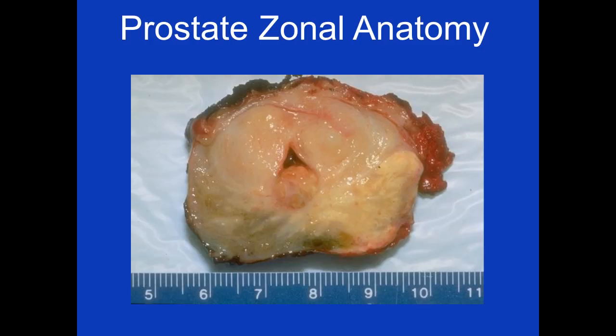This presentation will review the zonal anatomy of the prostate gland that is commonly used in pathology. The zonal classification was first proposed by McNeill in 1968. Dr. McNeill was a pathologist at Stanford.